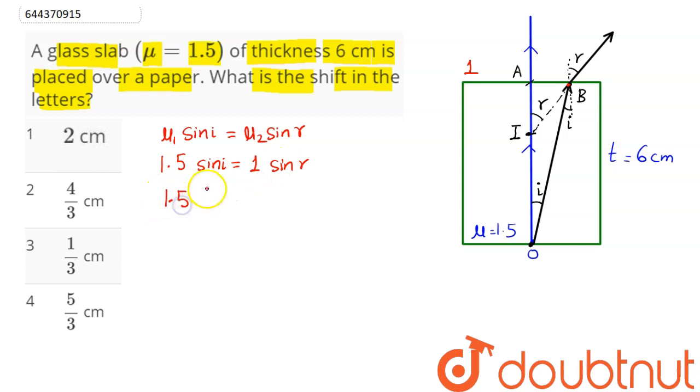Now tan i in this triangle ABO can be written as AB divided by AO. So this is 1.5 tan i equals AB divided by AO.